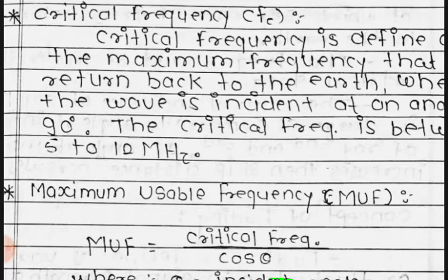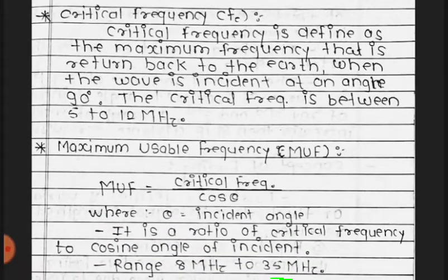Next, the definition of critical frequency (fc): critical frequency is defined as the maximum frequency that is returned back to the earth when the wave is incident at an angle of 90 degrees. The critical frequency is in the range of 5 to 12 megahertz.